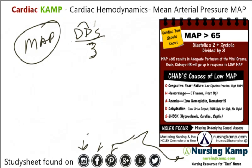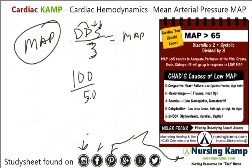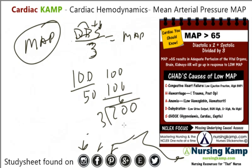Diastolic times 2, plus systolic, divided by 3 gives you the mean arterial pressure. So if you have a blood pressure of 150 over 50, diastolic times 2 which would be 100, plus systolic which is another 50, gives you 150, divide by 3, which gives you a mean arterial pressure of 66.